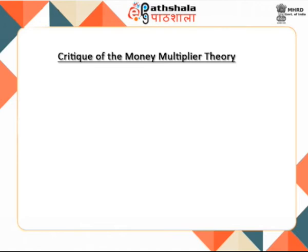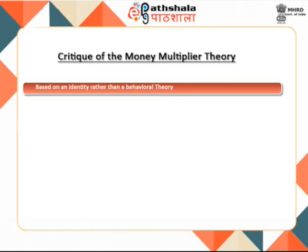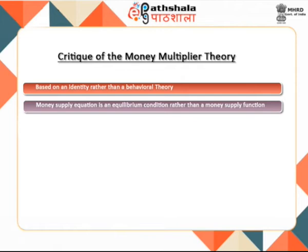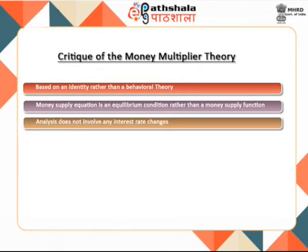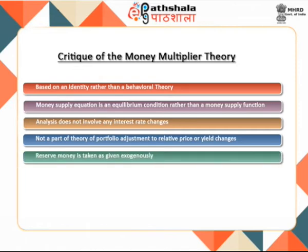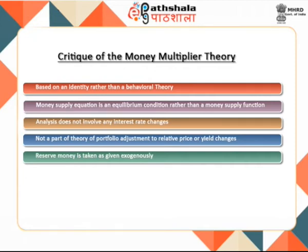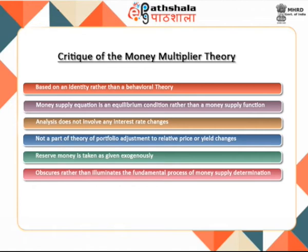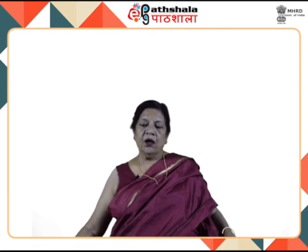Criticisms of the money multiplier theory include: it is based on an identity — just a description of movement in money stock rather than a behavioral theory; the money supply equation is an equilibrium condition rather than a money supply function, and the process is rather mechanical; the analysis does not involve any interest rate changes; the money multiplier theory is not part of a theory of portfolio adjustment to relative price or yield changes; and reserve money is taken as given exogenously with no examination of factors determining its level.